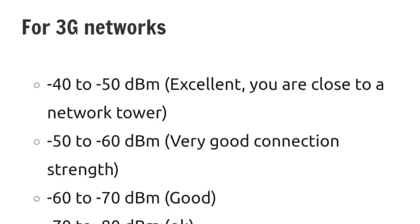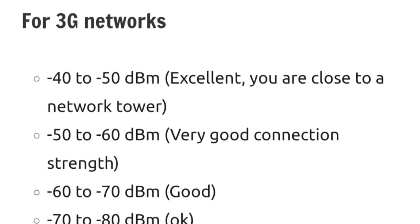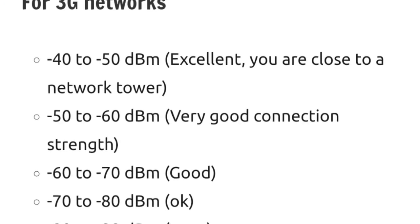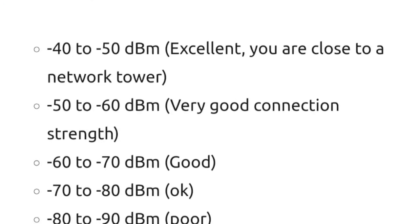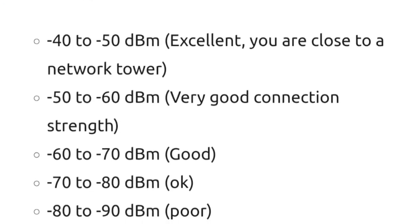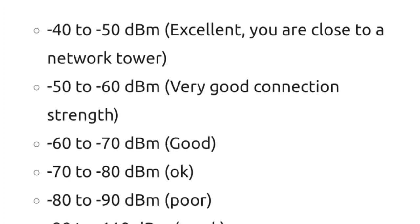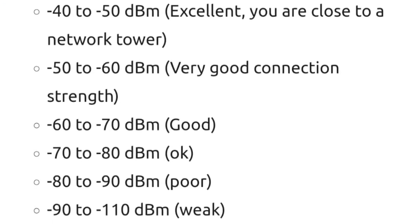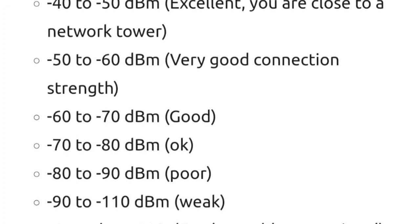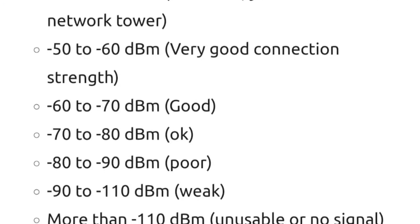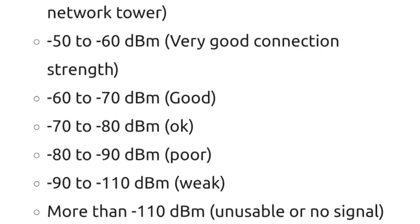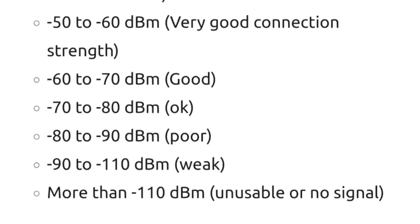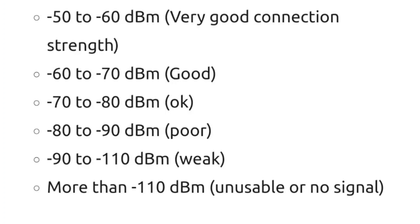Depending on the network you use — whether it's 3G, 4G, or 5G — these numbers have different meanings. On a 3G network: minus 40 to minus 50 dBm is excellent — you're very close to a cell tower. Minus 50 to minus 60 is very good. Minus 60 to minus 70 is good. Minus 70 to minus 80 is just okay. Minus 80 to minus 90 is poor — that's when network starts to get slow. Minus 90 to minus 110 is weak, and anything over minus 110 on 3G is basically unusable.